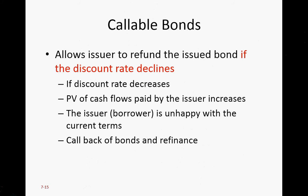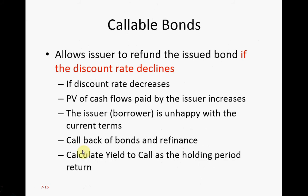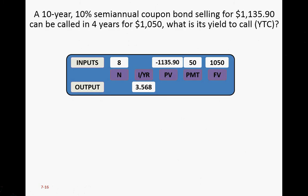In our practice, we have to calculate a term called yield to call. Yield to call is the holding period return if the bond is called back by the issuer. You have a 10-year, 10% semi-annual coupon bond selling for a given price — note that 10% is the coupon rate, not the yield to maturity. The bond has four years to be called back, and the call-back value is $1,050, which includes a 5% call premium.